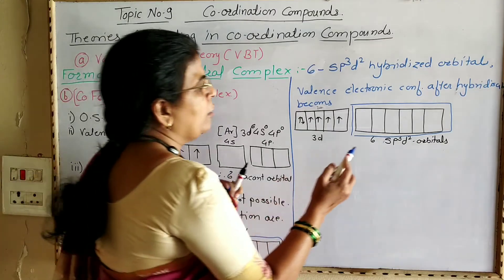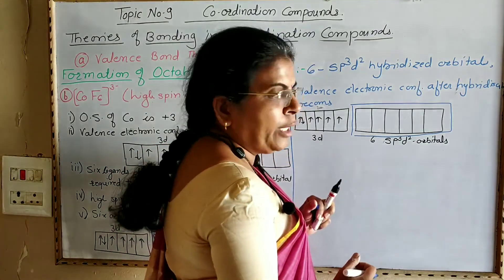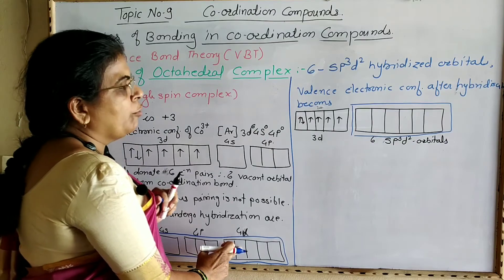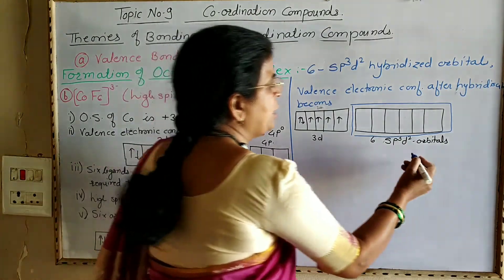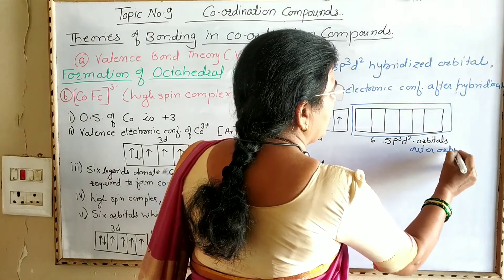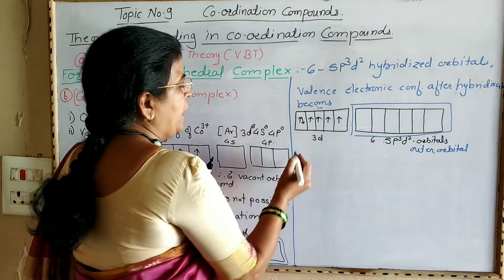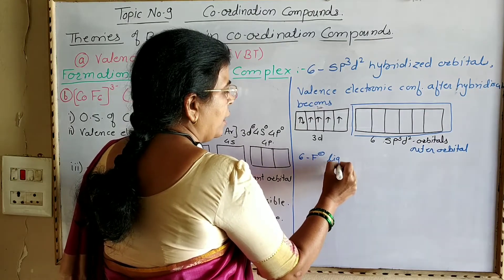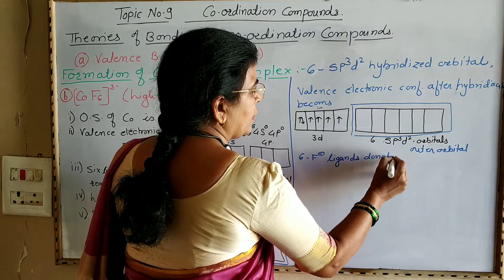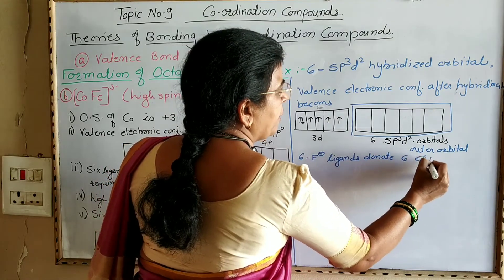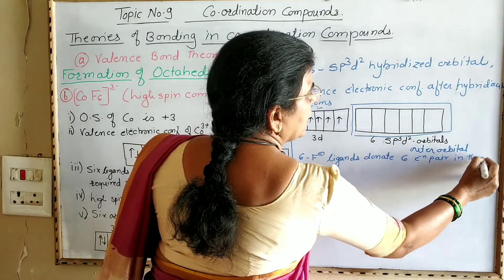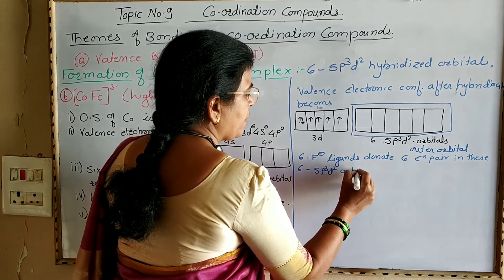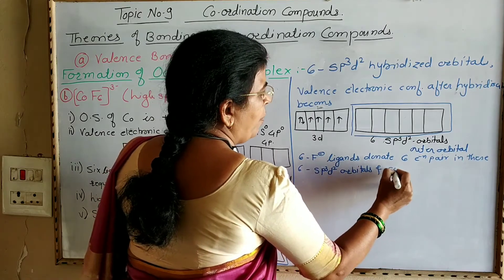Formation of 6 sp³d² hybridized orbitals takes place. During this hybridization, the outer 4d orbitals are used, and therefore it is an outer orbital complex. In the next step, 6 F⁻ ligands donate 6 electron pairs into these 6 sp³d² orbitals, and complex formation takes place.